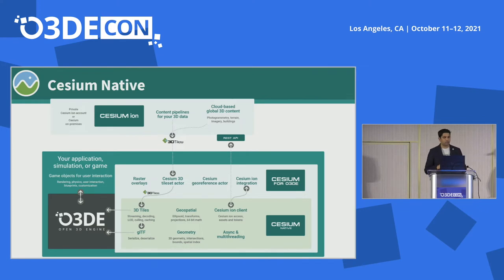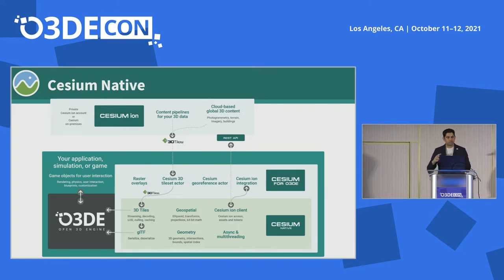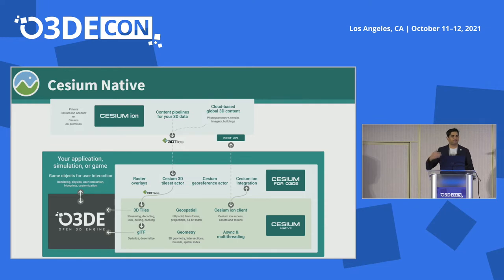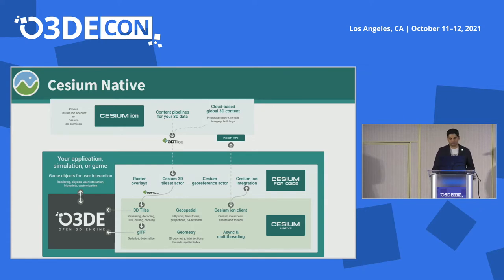Let's look at that architecture in a little more detail. Cesium Native is a part of Cesium for O3DE, and Cesium Native itself does not directly depend on anything from O3DE or any other game engine — that's what makes it great. Then there's Cesium for O3DE, which is a wrapper around Native that can take things from O3DE like the view frustum, pass it to Native, and then Native can decide which tiles to stream, what data to get, and all of that.